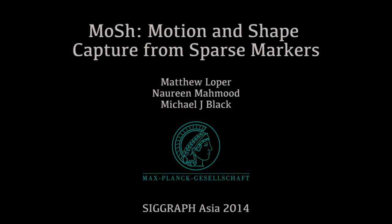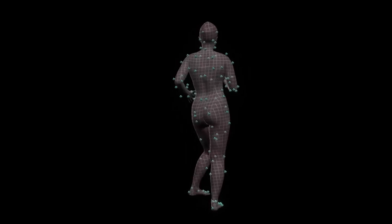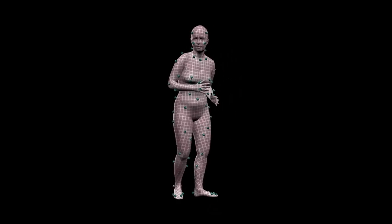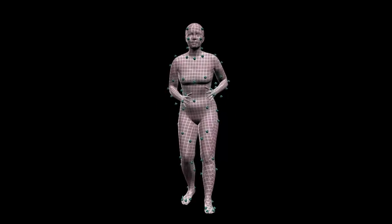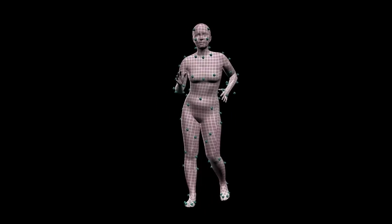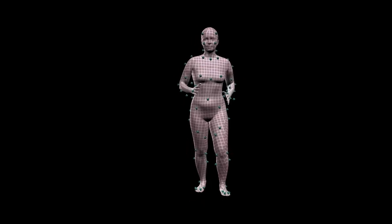Motion and Shape Capture from Sparse Markers. MOSH jointly captures human motion and body shape using existing marker-based mocap technology. By combining shape capture with motion capture, MOSH automatically creates animations with nuance and lifelike realism.